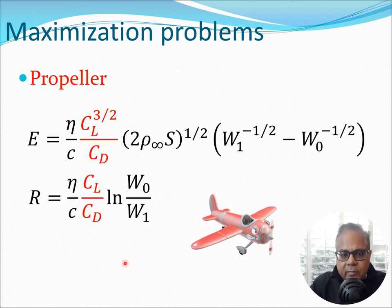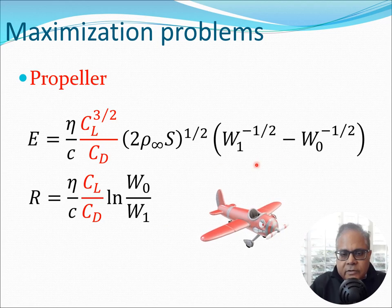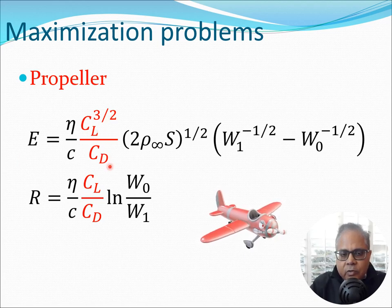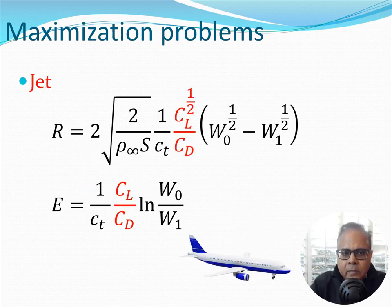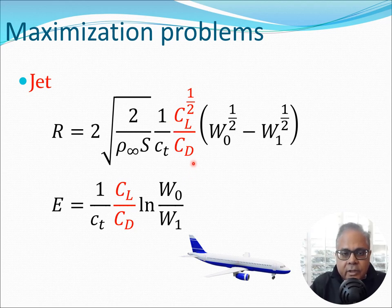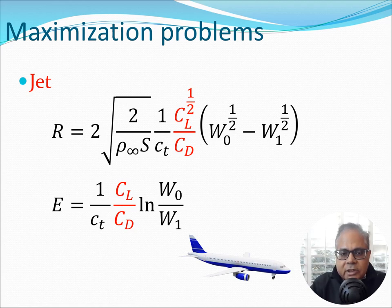For the propeller aircraft, endurance is proportional to CL^(3/2)/CD (highlighted in red) and range is proportional to CL/CD. For the jet aircraft, range is driven by CL^(1/2)/CD, and endurance maximization requires maximizing CL/CD. So we are going to look at three things: CL/CD, CL^(3/2)/CD, and CL^(1/2)/CD, and find the conditions at which each becomes maximum.